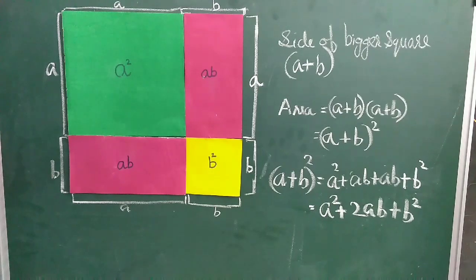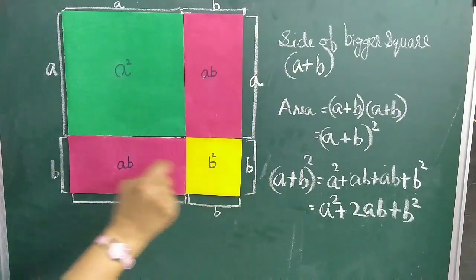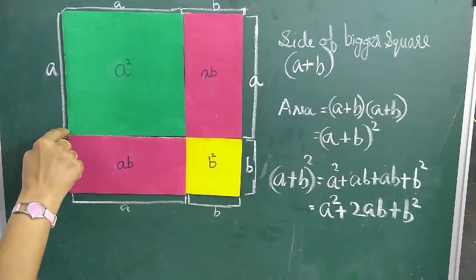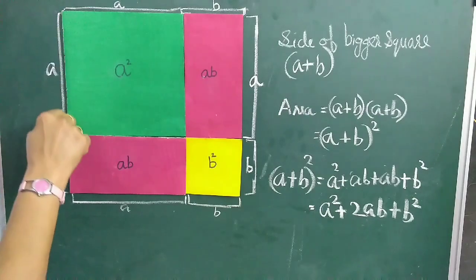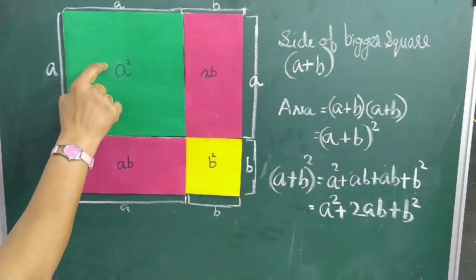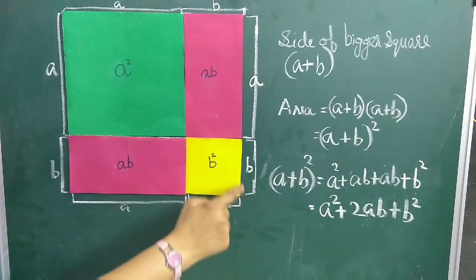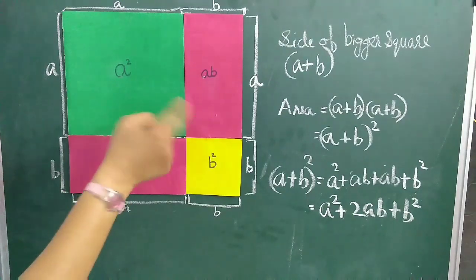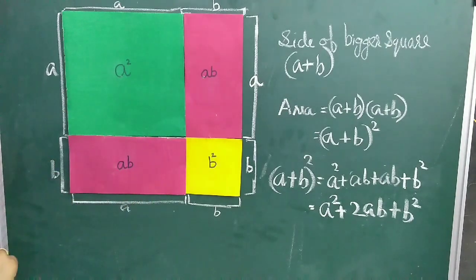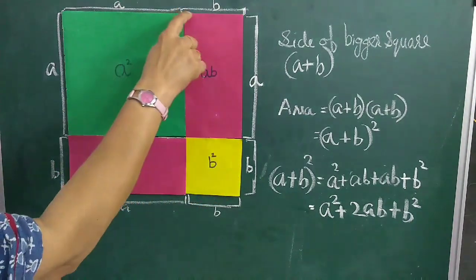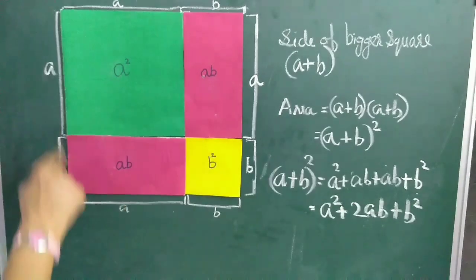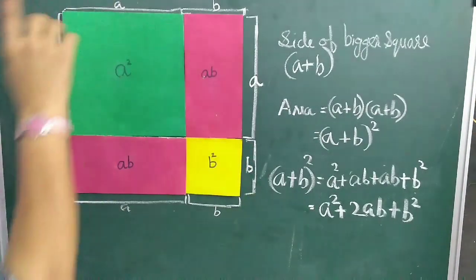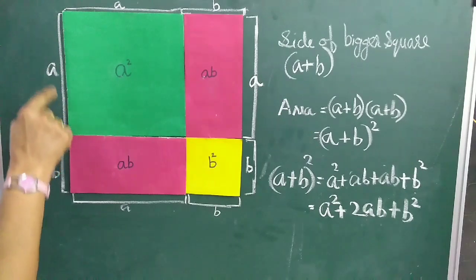Now we can prove the same identity practically. For that, take two squares of different sizes — the first having side a units and the second having side b units. The area of the bigger square is a² and the area of the smaller square is b². Now take two rectangles of the same size, each having length a units and breadth b units. When we join all four figures, we get a bigger square having side (a + b) units.